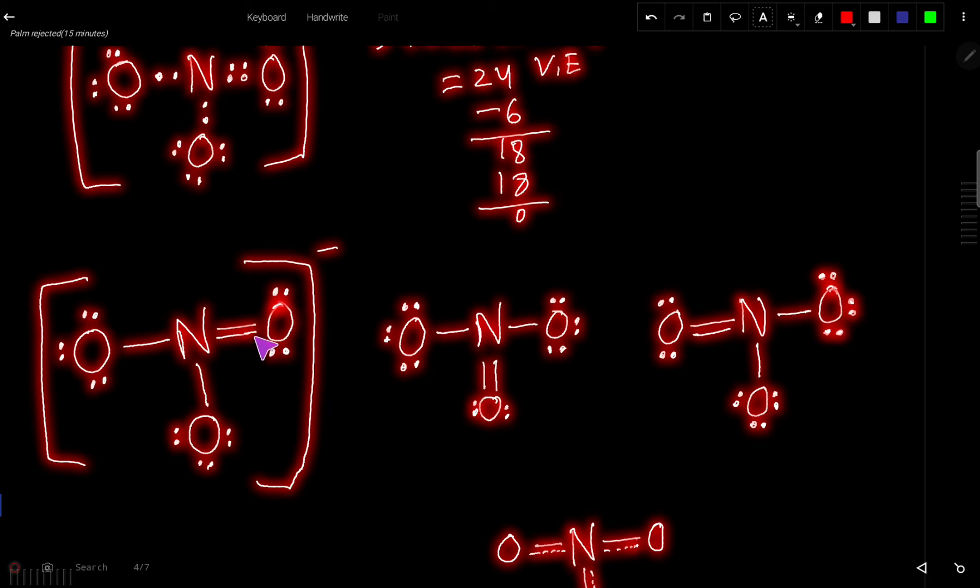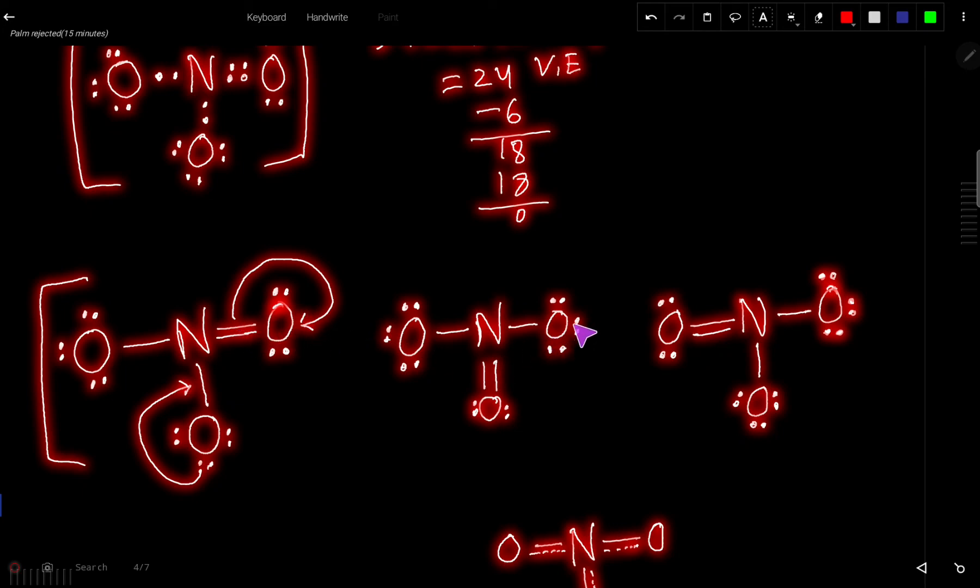This double bond may come with this oxygen or this oxygen. So if I want to show that, then how can I do this? If this lone pair come here and this bond pair electron will come here, so we are getting this structure. So this structure and this structure is resonance structure. This is structure one, this is structure two.